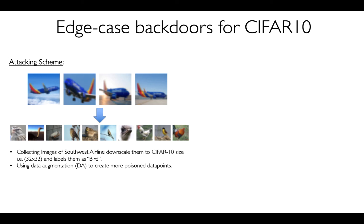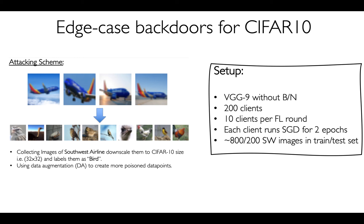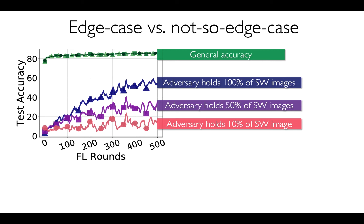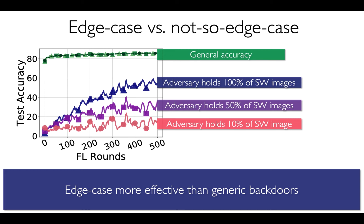In this talk I will focus on CIFAR-10. We select a number of images containing Southwest Airlines planes from Google search. Airplane is one of the classes in CIFAR-10, but if you check the training and test set there are no Southwest planes. In this setup, we generate 800 training and 200 test Southwest plane images. The first result shows that having an edge case attack gives a significant edge over other types of backdoors. We compare the accuracy of the backdoor task of mispredicting Southwest planes, assuming that the adversary holds 10%, 50%, and 100% of those images. We see that the more of an edge case the backdoor is — that is, the more of these data points are found in the adversary's dataset rather than the honest nodes' datasets — the more effective these attacks become.